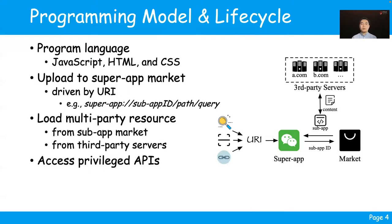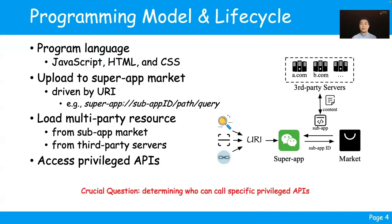Moreover, the sub-app can access some of the privileged APIs provided by the super app. However, given the existence of multi-party resources and access to privileged APIs in one super app, one crucial security research question is determining who can call specific privileged APIs. This is an access control issue, also called an identity check problem.